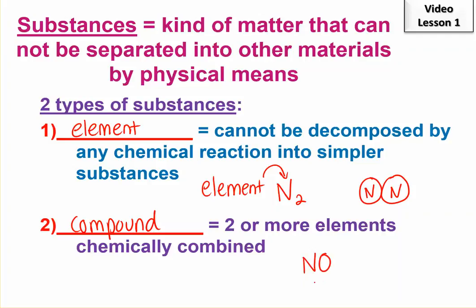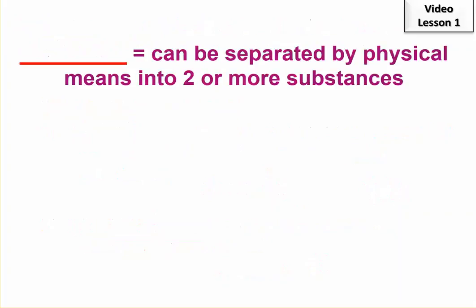This is called nitric oxide is the short name for this. Nitrogen oxide would be an IUPAC name. Anyway, so this one is a compound because there's two elements.